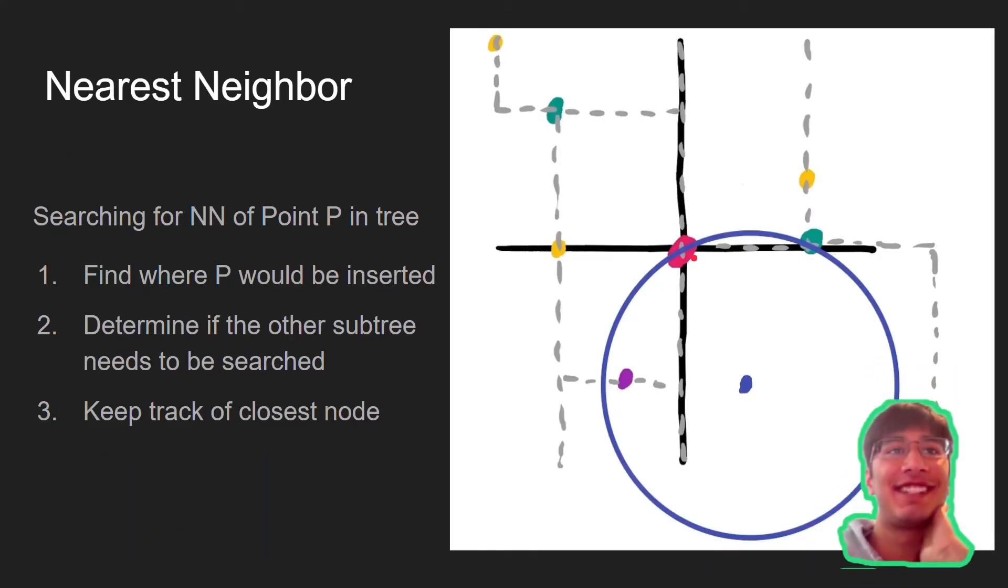A major application of the KD-tree is the nearest neighbor query. It works by walking down the tree to find where point P would have been inserted, and then unwinding the recursion node in order to update the value of the current closest node. While doing so, it needs to determine whether we need to search in the other side of the tree for any candidates for a closer node, and in the end return the closest one.